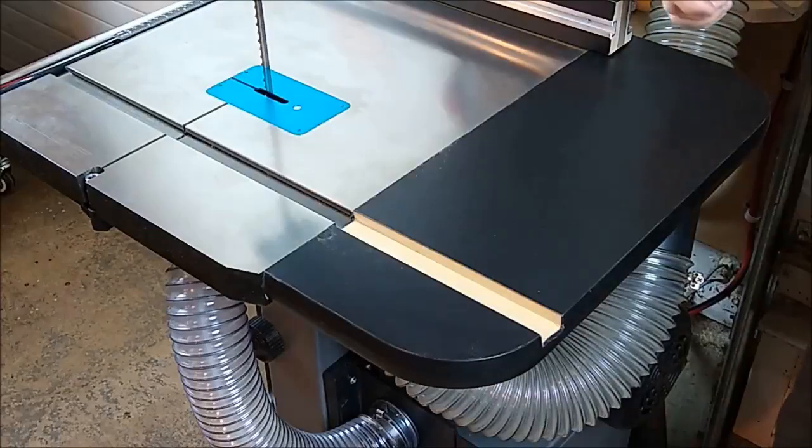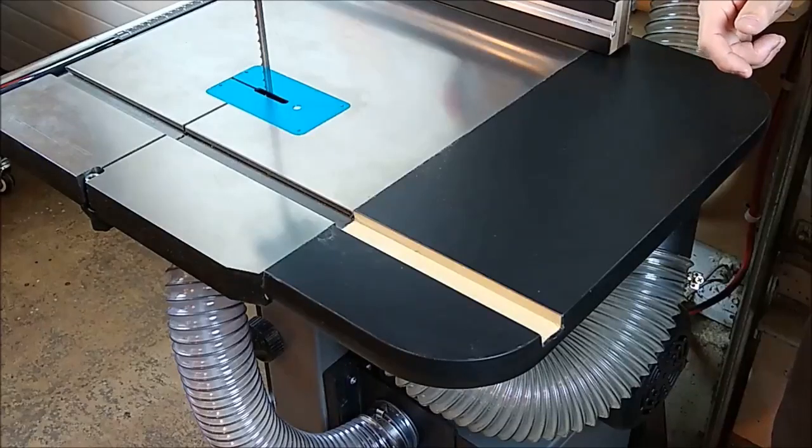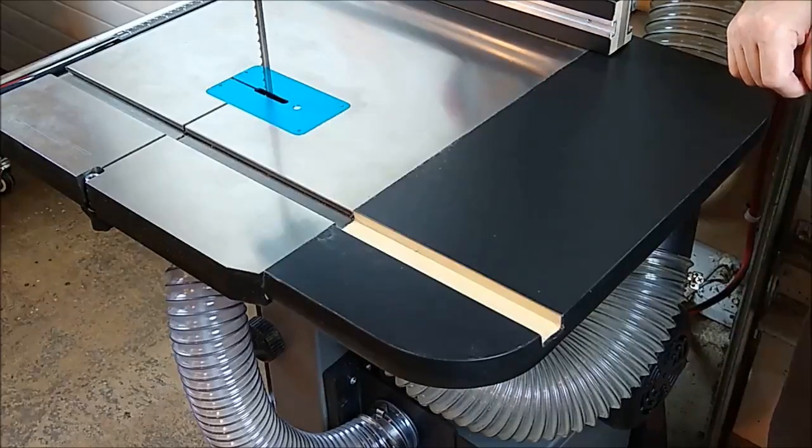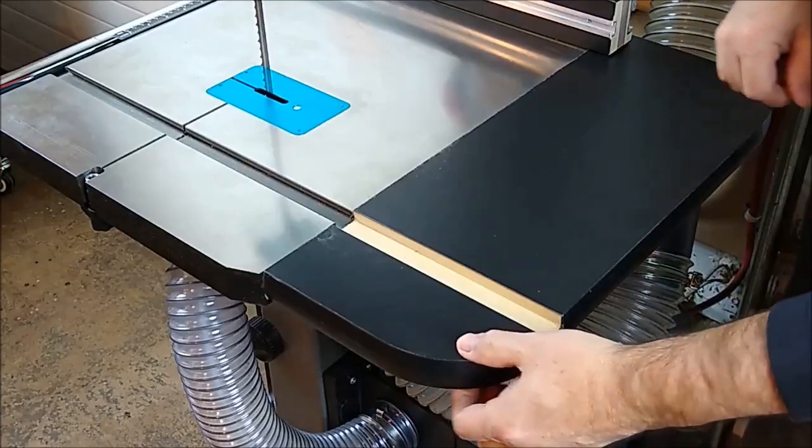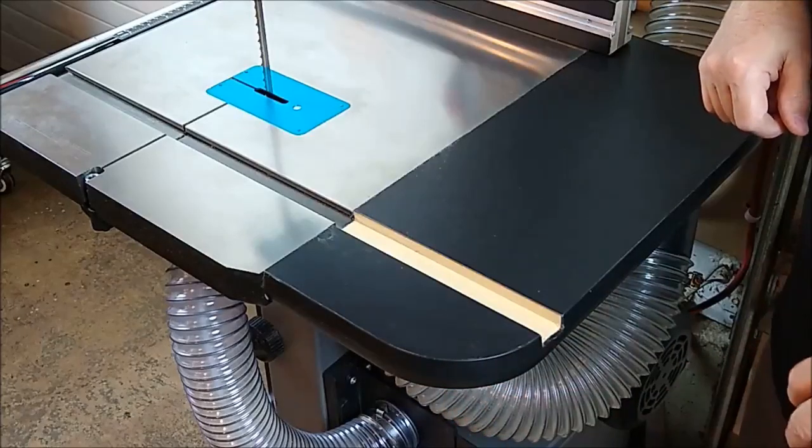So the second modification is this small outfeed table for the Laguna bandsaw. It's about eight inches deep and it's built from MDF. The top layer is one inch thick MDF and the bottom layer is half inch thick MDF.